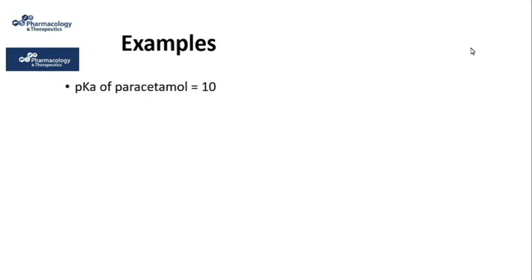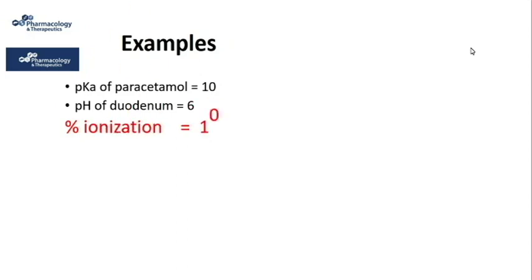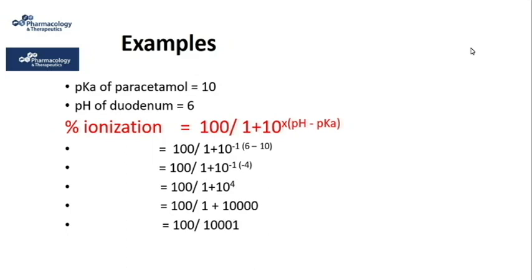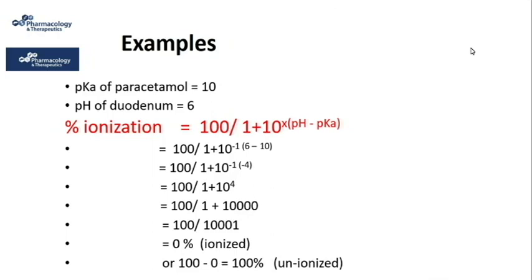Calculating the percent ionization of paracetamol in the duodenum using the same modified Henderson-Hasselbalch equation, we find that no paracetamol is ionized in the duodenum — the full 100% of the drug remains unionized at duodenal pH.